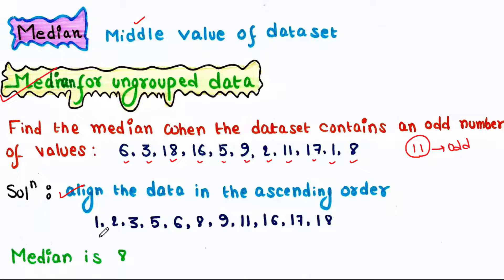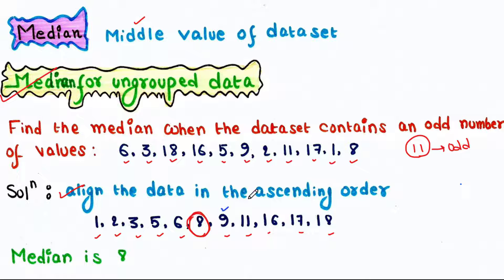In ascending order: 1, 2, 3, 5, 6, 8, 9, 11, 16, 17, 18. So the median is 8, since there are 5 values above it — 9, 11, 16, 17, 18 — and 5 values below it — 1, 2, 3, 5, and 6. So 8 is the middle value.